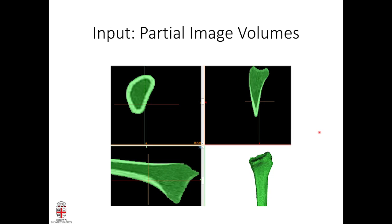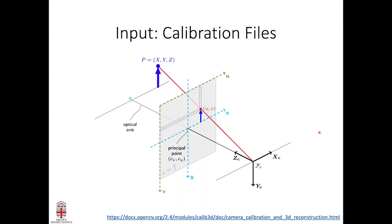We also need the calibration files. These define the space for our x-ray systems — basically where the x-ray sources are and where the x-ray image intensifiers are. Using two images, like two eyes, we reconstruct the 3D world, but we need a coordinate system to define everything relative to that.